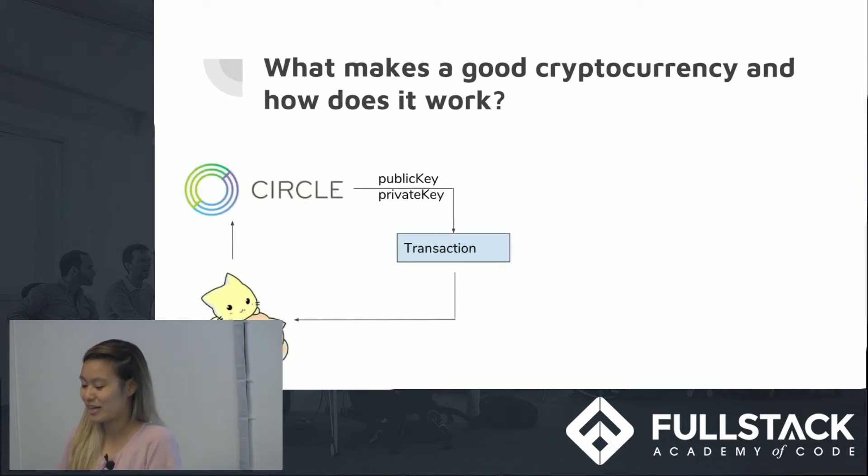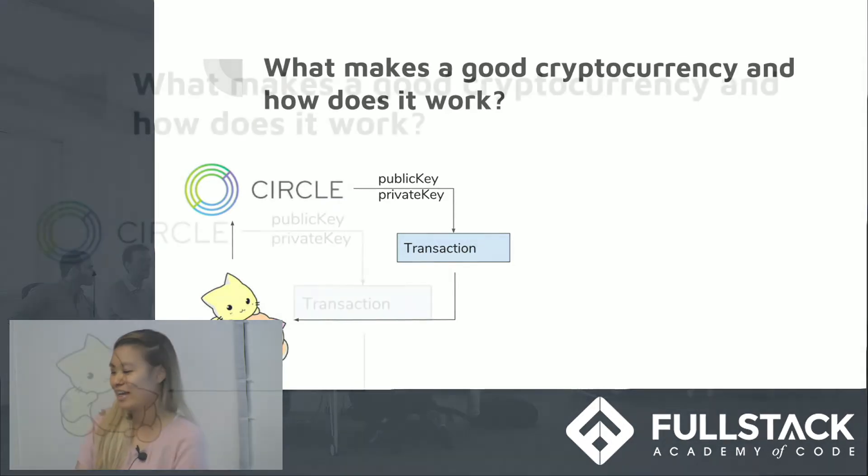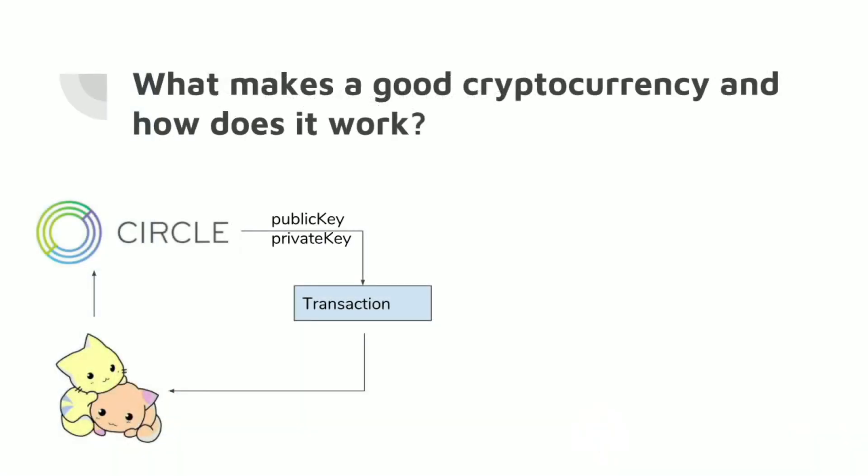So we'll take these two cats here — the yellow cat and the orange cat, Alice and Bob. Alice wants to buy a toy from Bob and she wants to pay him using her Bitcoin. Her Bitcoin will be stored in a wallet — here I'll be using Circle as an example. When she wants to transfer the right amount of Bitcoin to Bob, Circle will make a public and private key pair that will digitally sign this transaction. And that is all that happens on the user side.